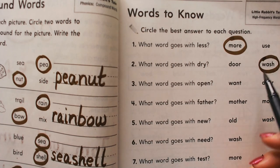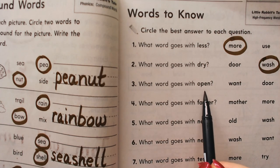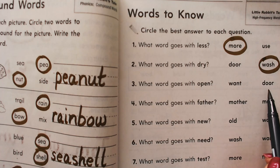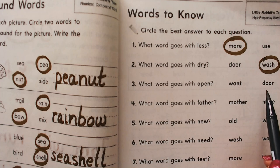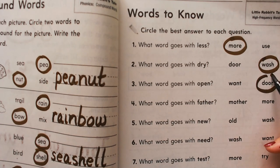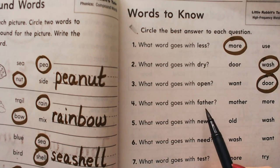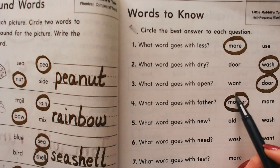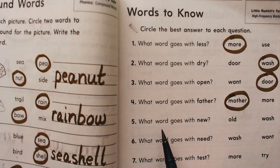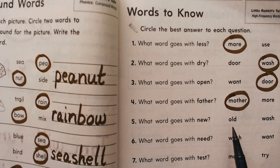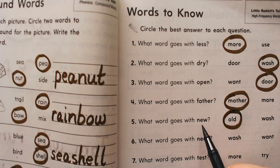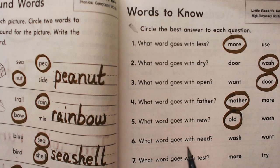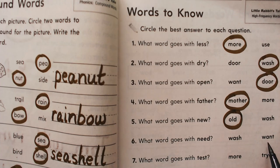What word goes with open? Want or door? I think door, because you open a door — you also close it. What word goes with father? Mother or more? Mother — father and mother are parents to a child. What word goes with new? Old or wash? I would say old because old is the opposite of new.